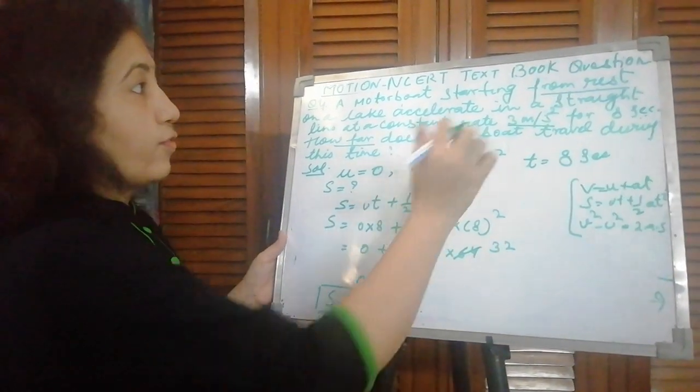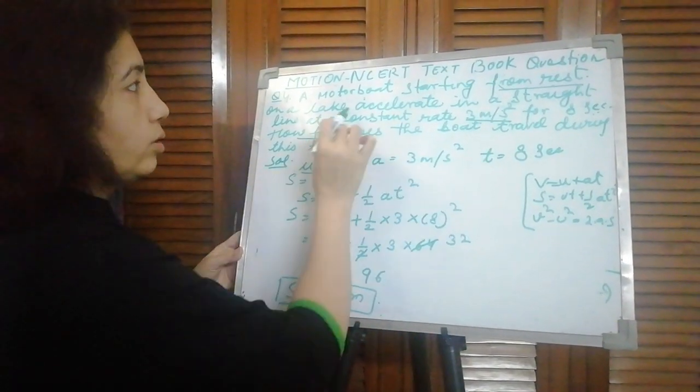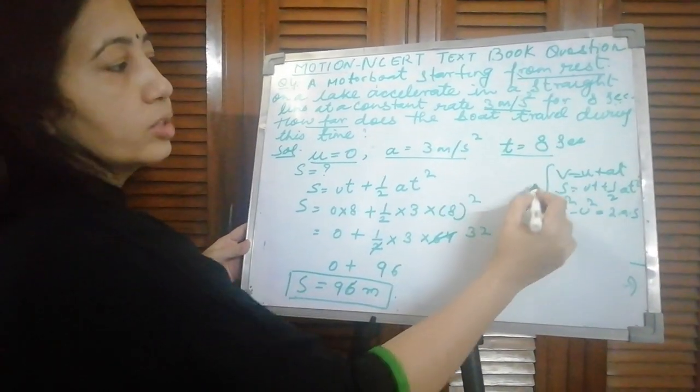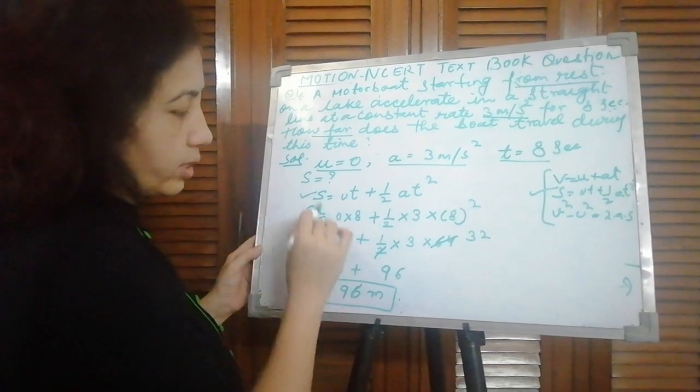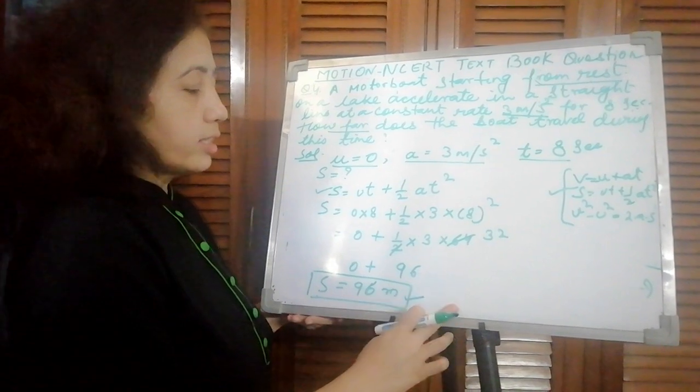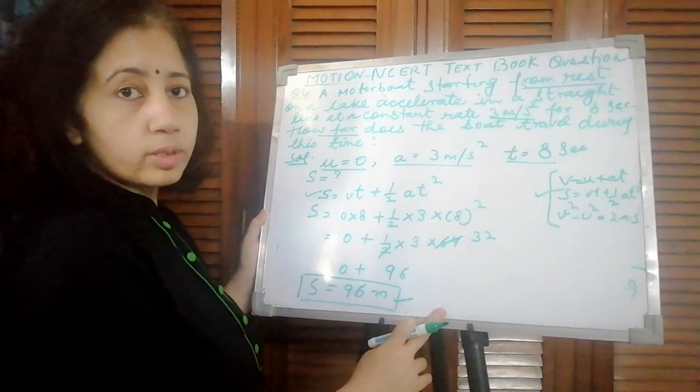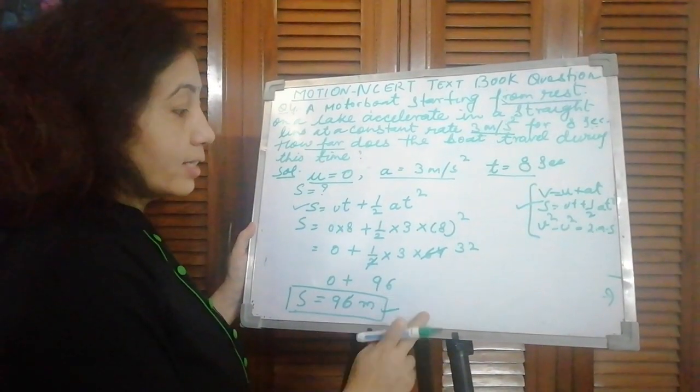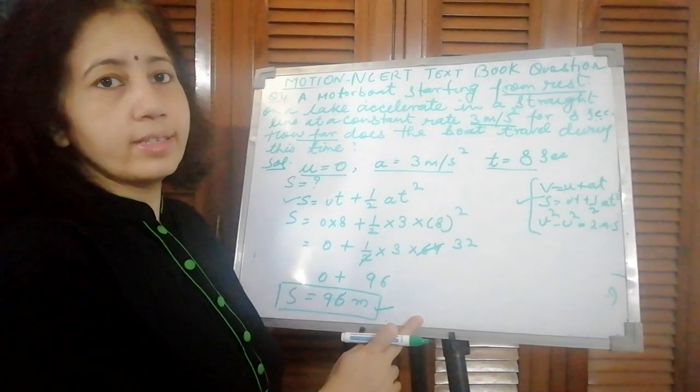So if anything is stated as starting from rest, then u is 0. Acceleration is given and time is also given, so you have chosen second equation. Start from the second equation, substitute all the values and get the result. That's it for today. In the next session we will do the remaining questions: question number 3, 5, 6 and so on. So practice these questions thoroughly in your notebook. Thank you and have a nice day.